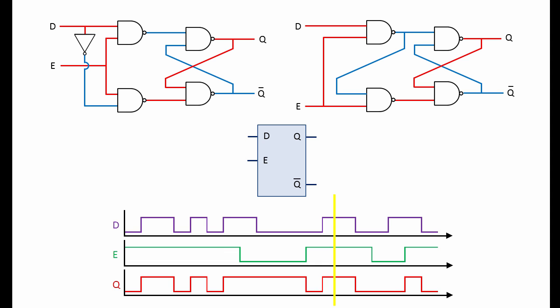The essence of this behaviour is that the output follows the input while the D latch is enabled. If the D latch is disabled, it retains its current state. This means the D latch can be used to capture and store one bit of data. It's a one-bit memory device.